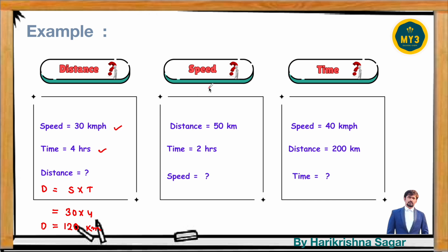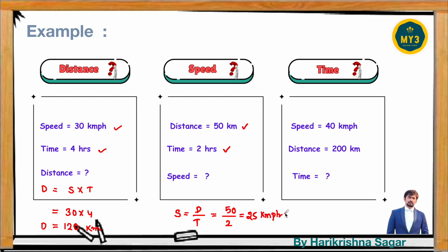If they ask you to find the speed: distance is 50 km and time is 2 hours. Speed = distance/time = 50/2 = 25 kilometers per hour. If they ask you to find the time: speed is 40 km per hour and distance is 200 kilometers. Time = distance/speed = 200/40 = 5 hours.